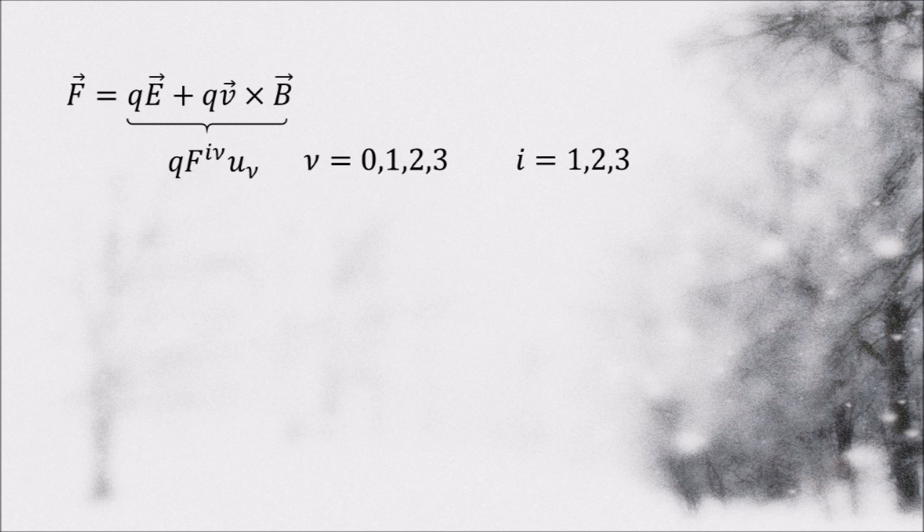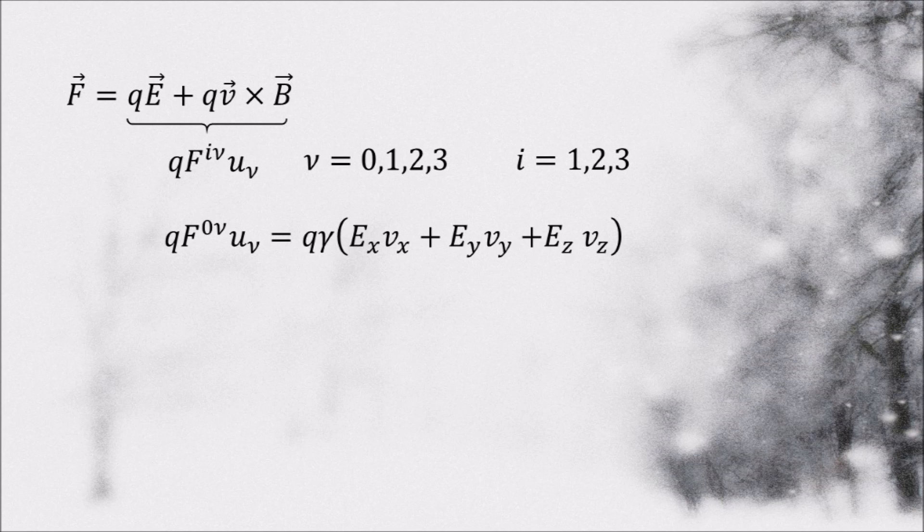But what about the time component? Let's write it down. If we express it in the vector notation, like this, and write the velocity as the derivative of the position vector with respect to time, we can see that the numerator is the definition of the work done on the charge.